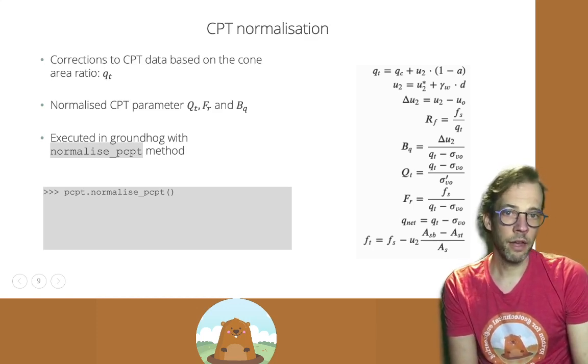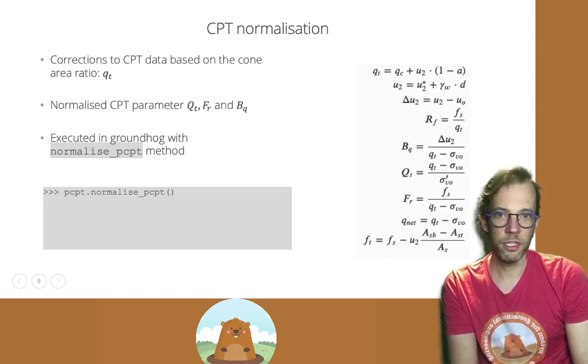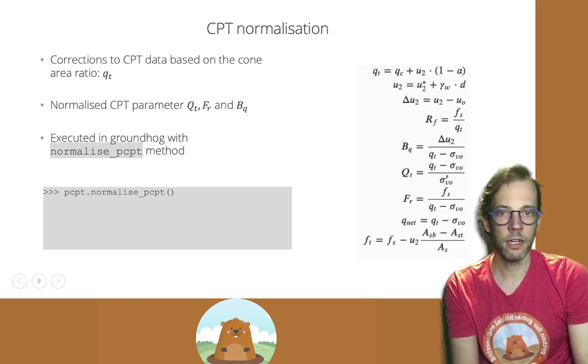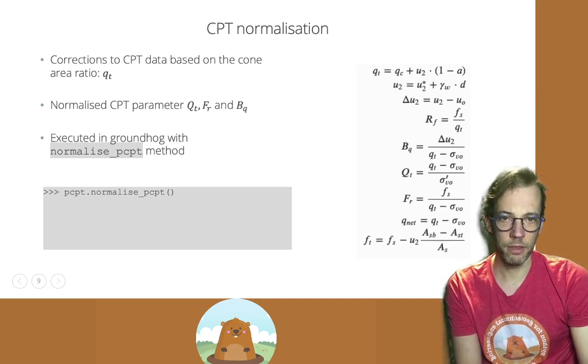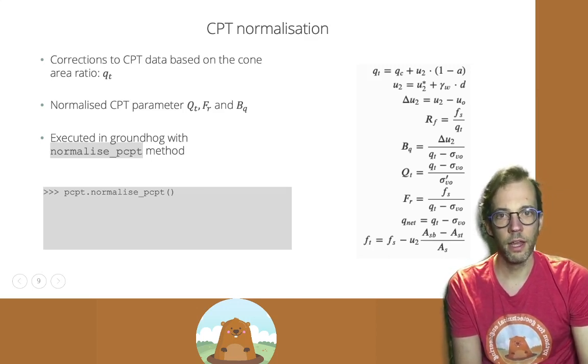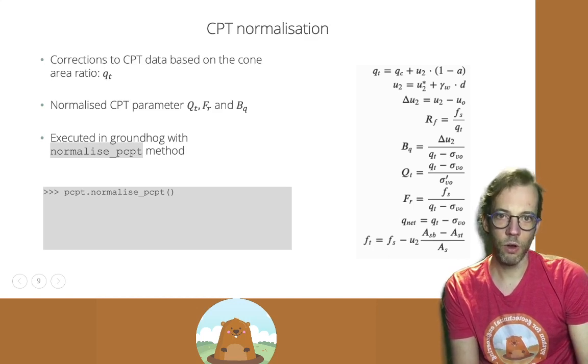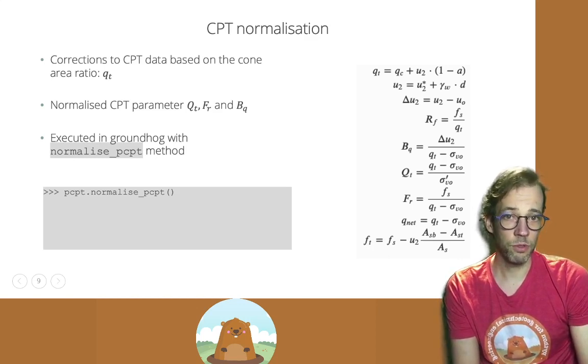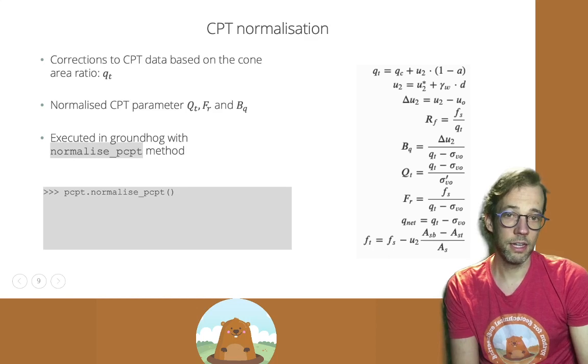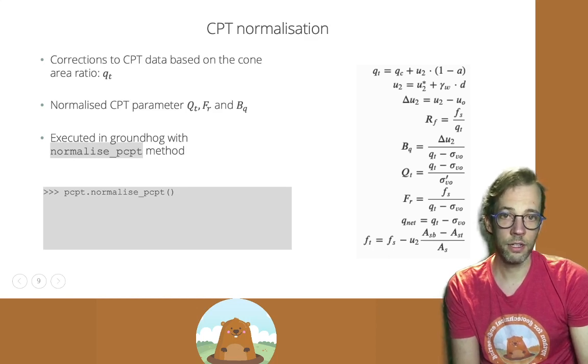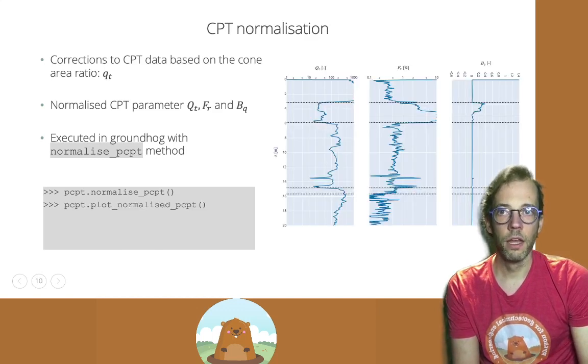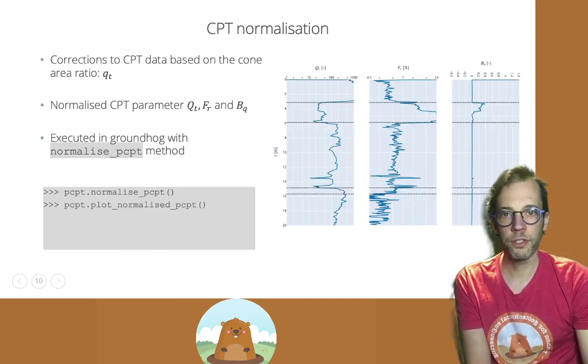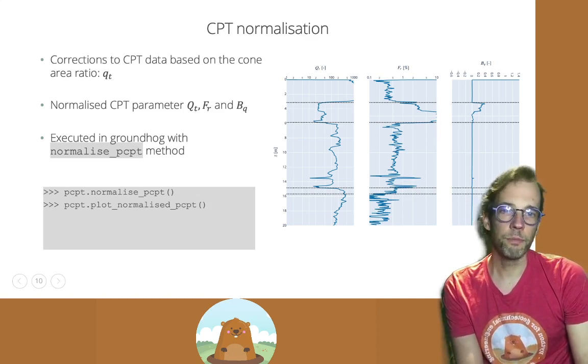We also then have formulae to normalize CPT properties, which you can see on the right hand side. And these formulae can be executed with just a single line of code using the normalizePCPT method. If you execute that method on the CPT processing object, you will get additional columns in your data attributes which reflect the normalized properties.